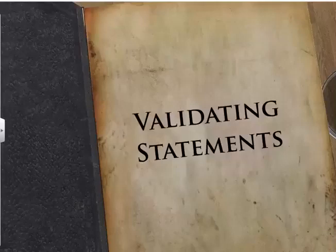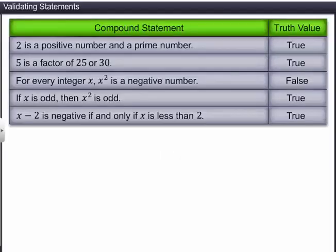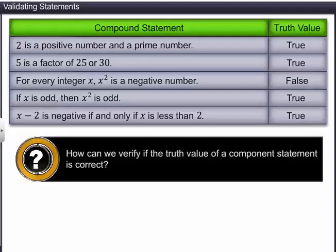In this module, you will learn about different methods used to validate mathematical statements. We know that every mathematical statement is either true or false, and the truth value of a compound statement depends on the truth values of the component statements involved in it. How can we verify if the truth value of a component statement is correct? The answer depends on the connective words, quantifiers, and implications involved in the compound statement. To validate such statements, we follow certain rules.